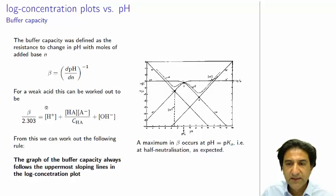That's the meaning of this equation. And what we can see is that the buffer is very good. This beta has a local maxima around about this region, around about the pKa. This is where the buffer is very good, in this weak acid system.